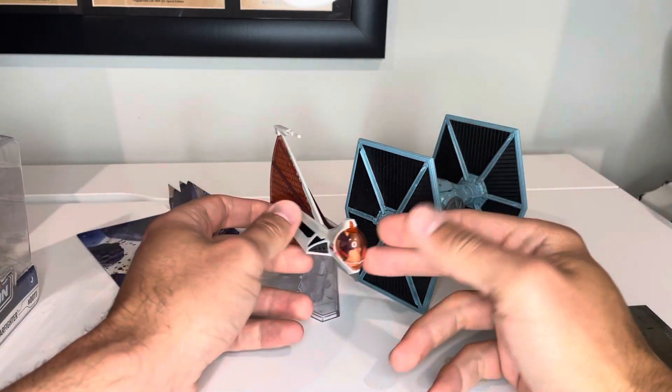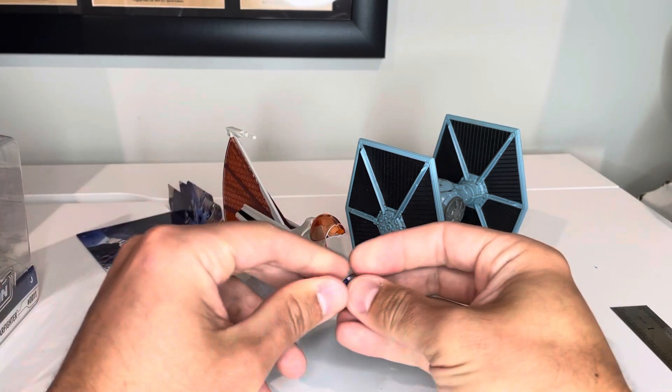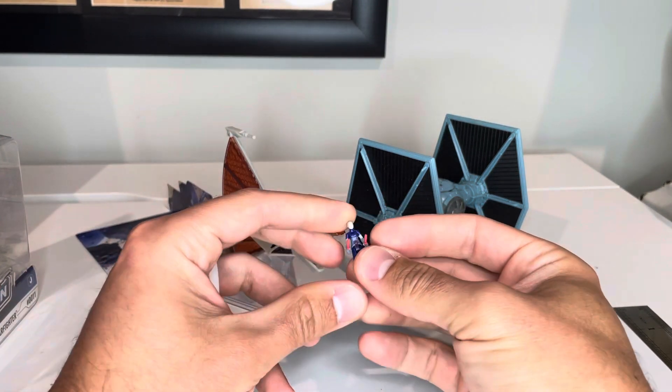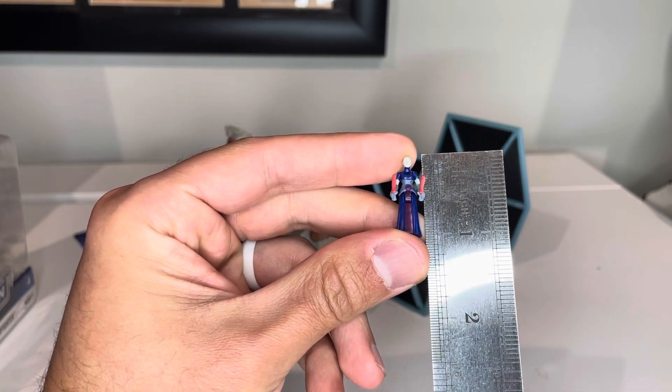From a figure perspective, the figure is an inch tall, just like all the rest of them. And the action fleets are an inch and an inch.